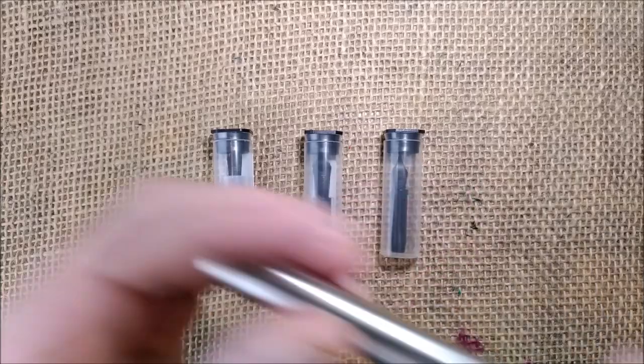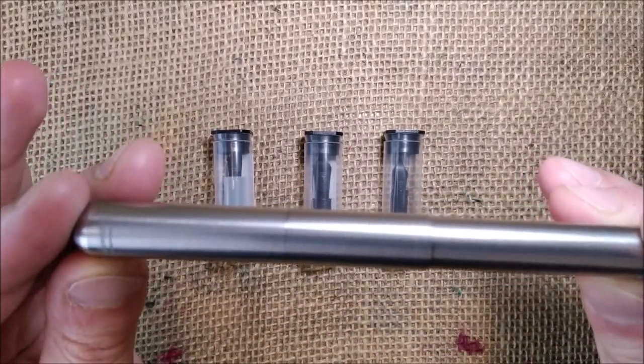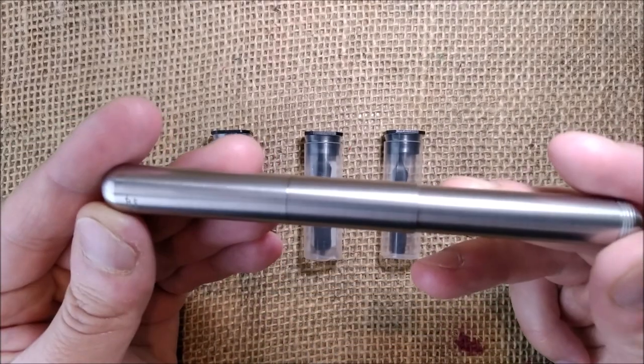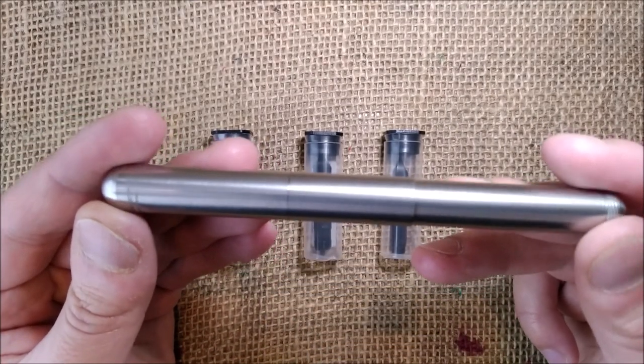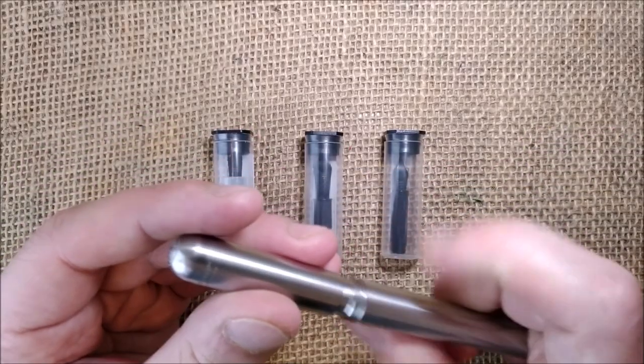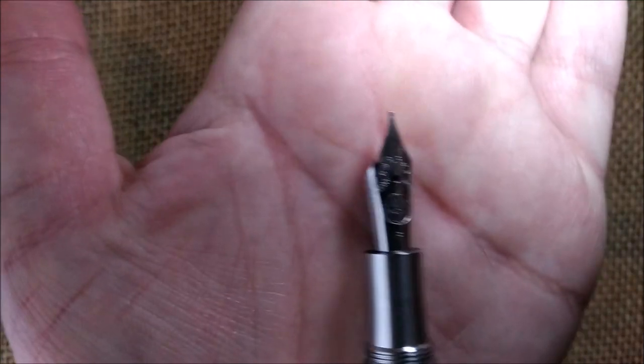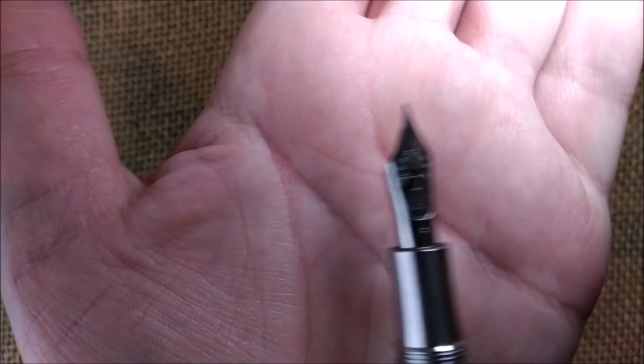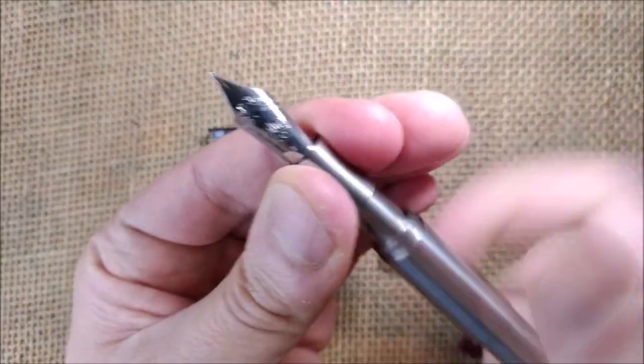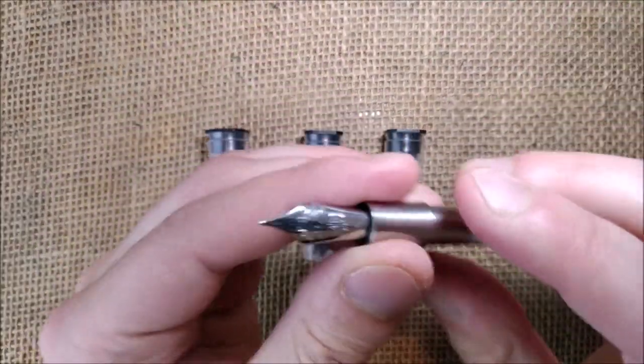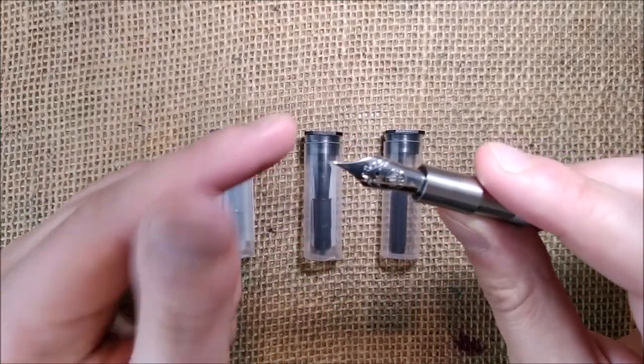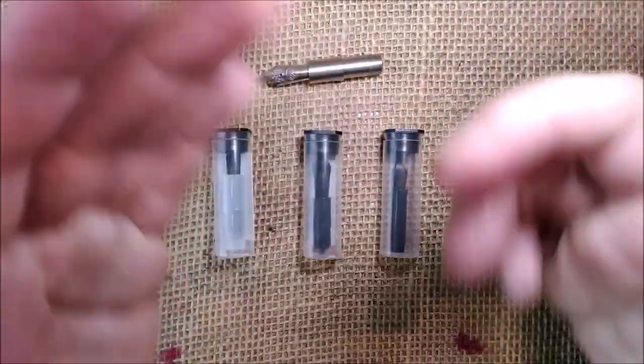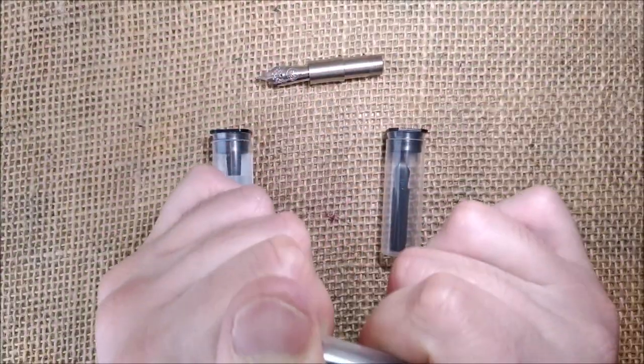And I will start by this one. This is the Kaweco Steel Supra or Supra Steel. This is a pen that I received from Kaweco for review purposes and I don't know if you remember I made a video that time that this pen had the nib a little bit bent to the side. I fixed most of the problem but Kaweco sent me a new nib anyway. So you have here the section of the pen with the damaged nib, it's no longer damaged but let's call it like that.